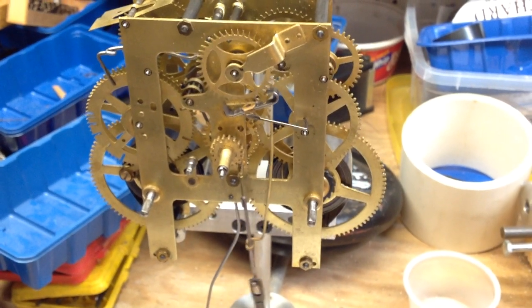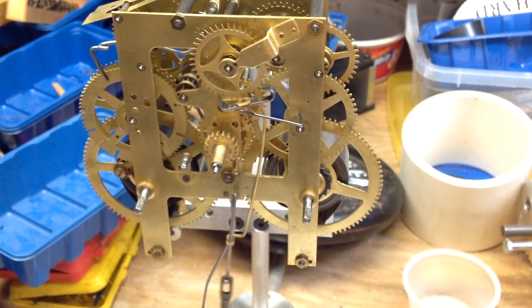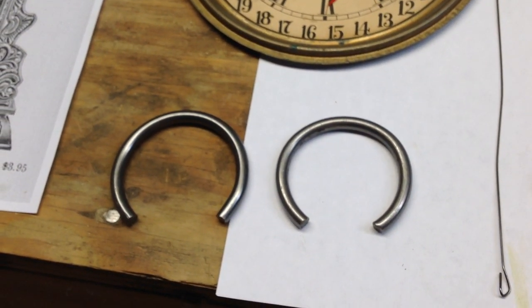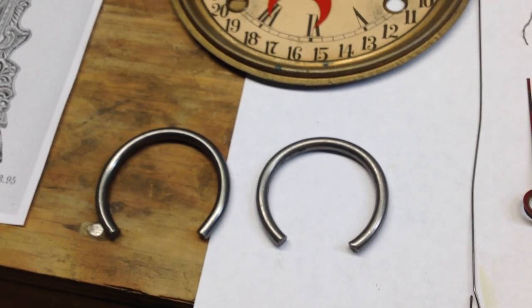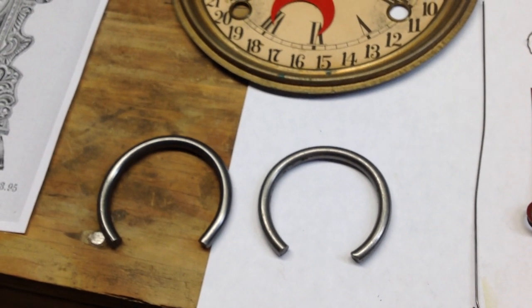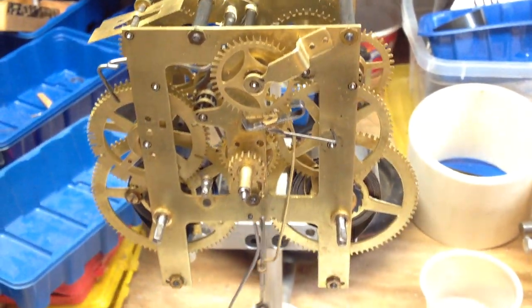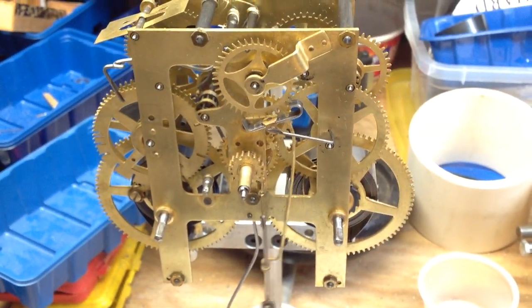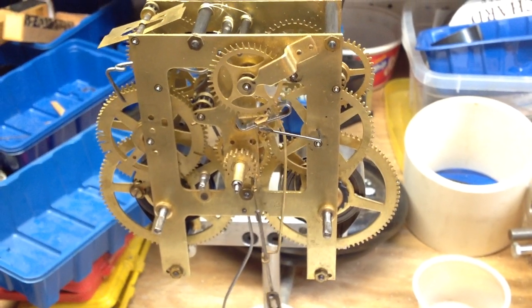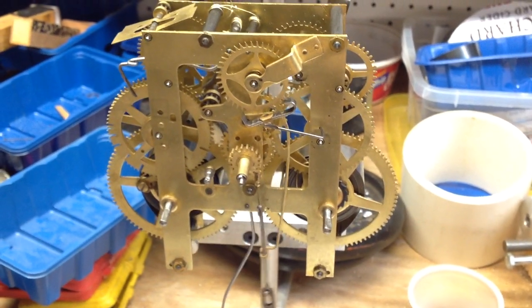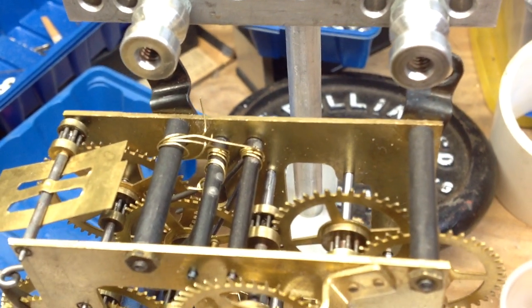So to service this movement I had to take it completely apart. So you get these clamps that you put on the main springs and then you let down the springs into these clamps and then you can take the five pillar nuts off. You can take the whole thing all apart and clean all the parts and polish the pivots and I put nine bushings into the plates.